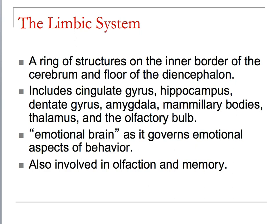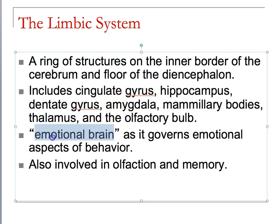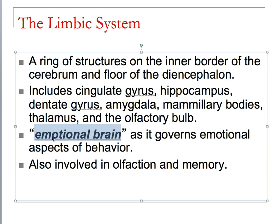And where does that actually come from? Well, we have a limbic system, which includes the cingulate gyrus, the hippocampus, the dentate gyrus, the amygdala, the mammillary bodies, the thalamus, the olfactory bulb — and they make up our emotional brain. It governs all of the most fundamental aspects of our behavior.